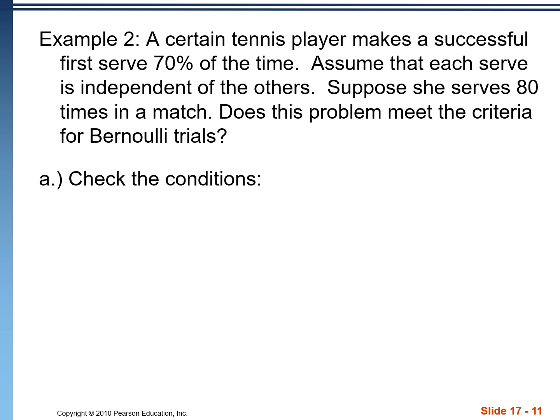Example two says a certain tennis player makes a successful first serve 70% of the time. Assume each serve is independent of the others. Suppose she serves 80 times in a match. Does this meet the criteria for Bernoulli trials? If you can remember bins, this is a hint to remember what four criteria you need for a Bernoulli trial.